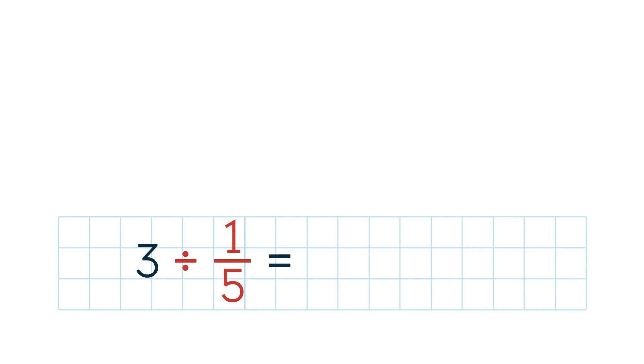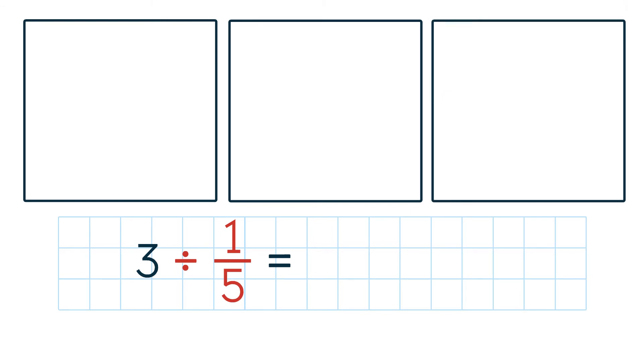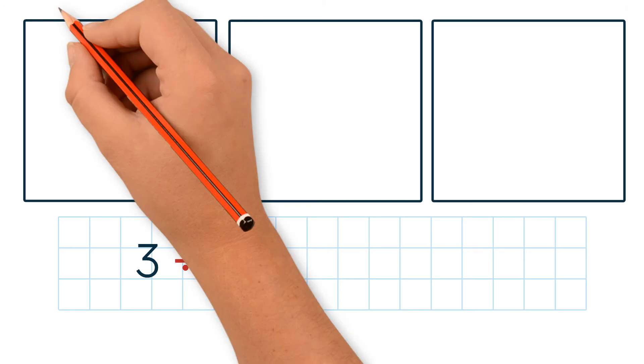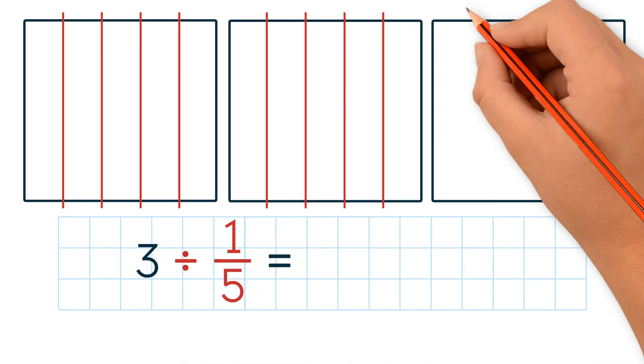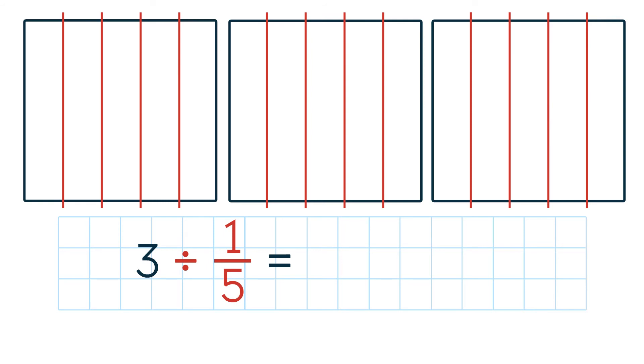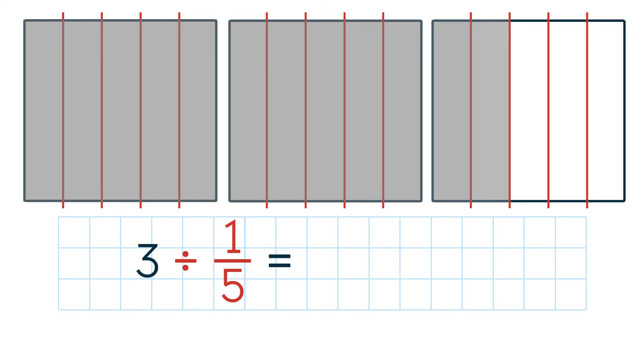Let's do another example: 3 divided by 1 5th. 3 is the dividend and 1 5th is the divisor. Let's draw it out. We draw 3 squares to represent the dividend, 3. Since the divisor is 1 5th, we divide each square into 5ths. Now we count the total number of fifths. We have 15 of them. So the final answer is 15.